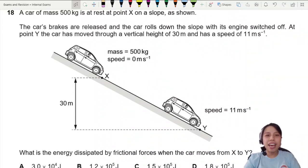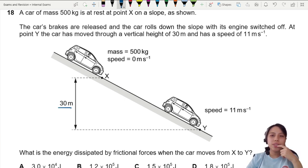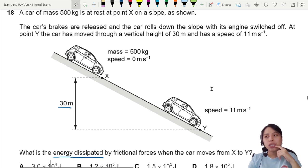A car of mass 500 kg is at rest at point X on a slope. The car's brakes are released and it starts to roll down with the engine switched off. At point Y, the car has moved through a vertical height of 30 meters and has a speed of 11 meters per second. What is the energy dissipated by frictional forces when the car moves from X to Y?